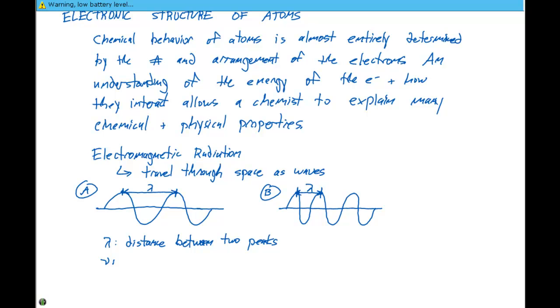So the wavelength is gonna be the distance between two peaks on the same wave. The Greek letter NU is used to abbreviate the frequency. And the frequency is the number of peaks that pass a given point per second. So if we look at these, the wavelength for wave A is gonna be greater than the wavelength for wave B. Whereas the frequency of wave B is gonna be greater than the frequency for wave A.